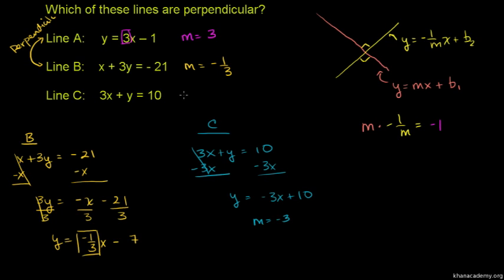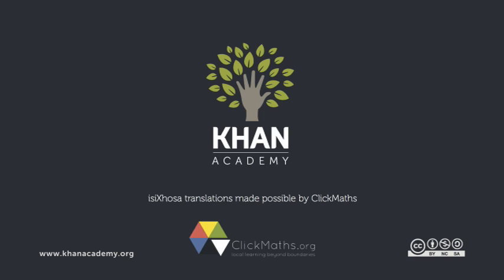Line C: 3x plus y equals 10, so y equals minus 3x plus 10. The slope is minus 3. Minus 1 over 3 compared to minus 3, the negative inverse would be minus 1 over minus 3.